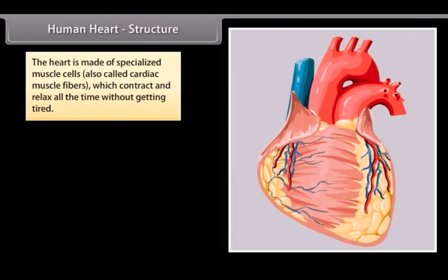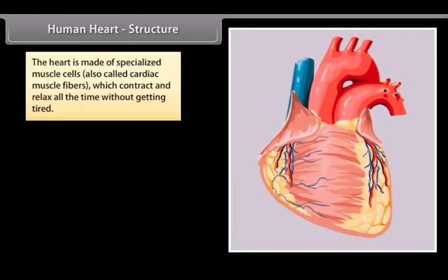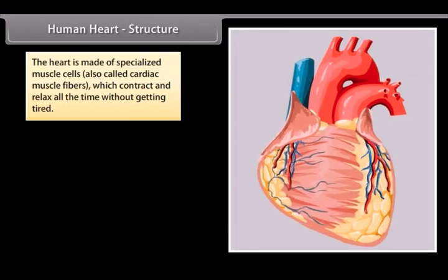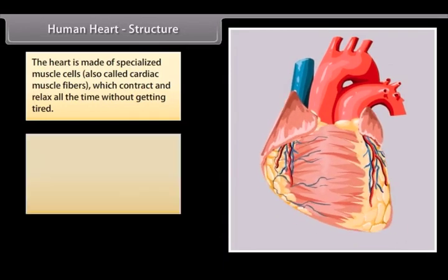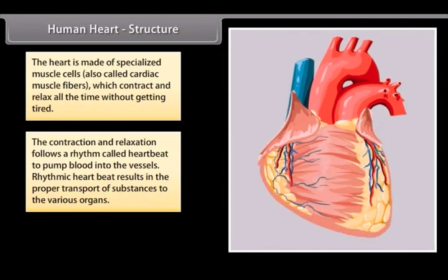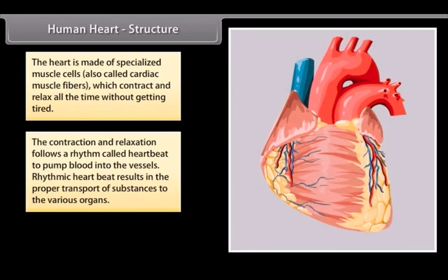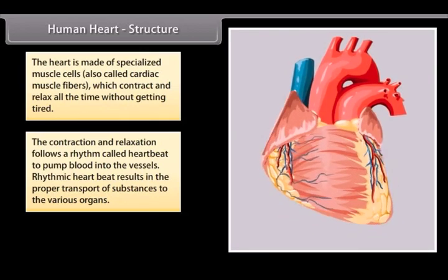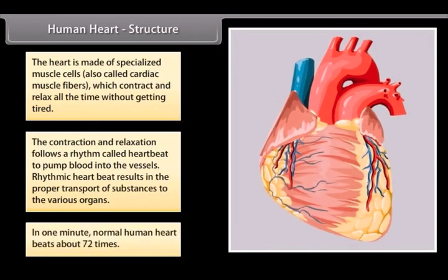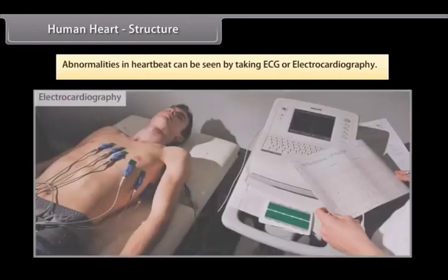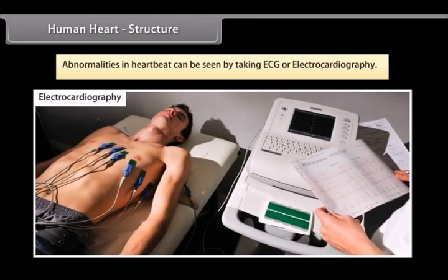The heart is made of specialized muscle cells, also called cardiac muscle fibers, which contract and relax all the time without getting tired. The contraction and relaxation follows a rhythm called heart beat to pump blood into the vessels. Rhythmic heart beat results in the proper transport of substances to the various organs. In one minute, normal human heart beats about 72 times. Abnormalities in heart beat can be seen by taking ECG or electrocardiography.